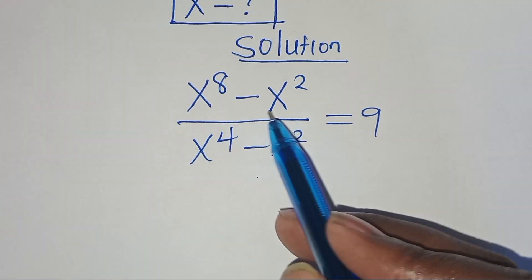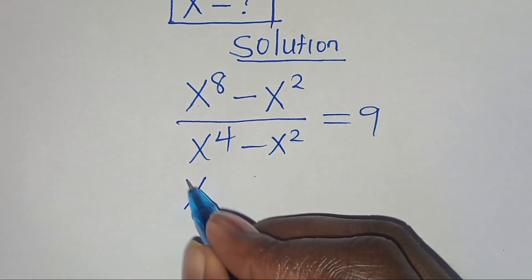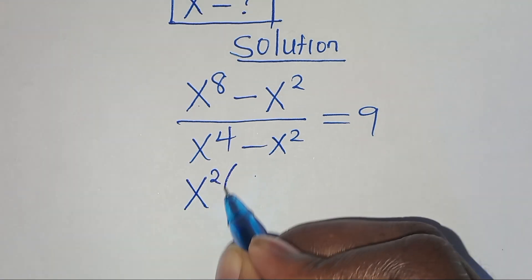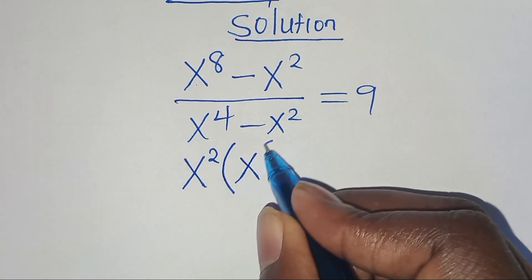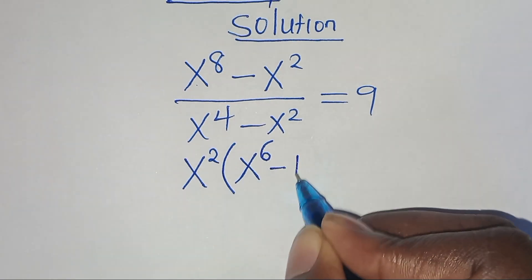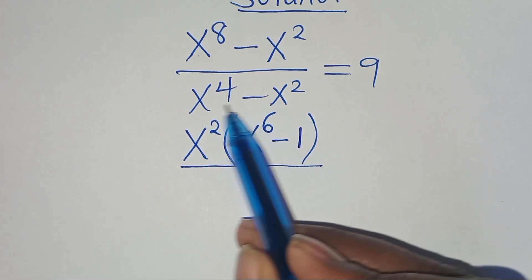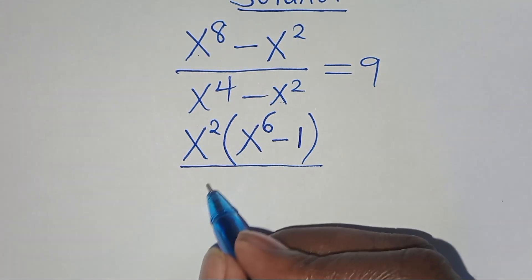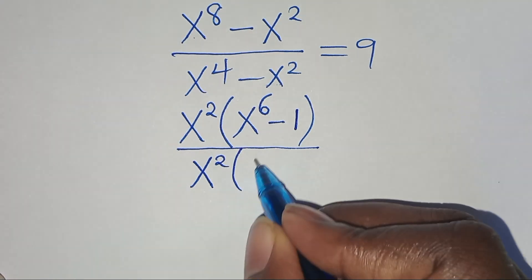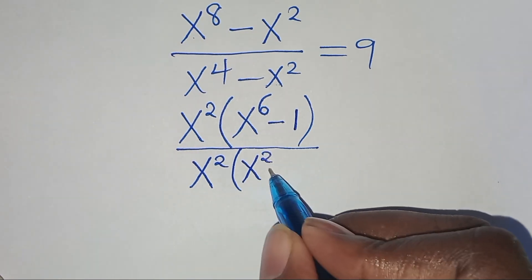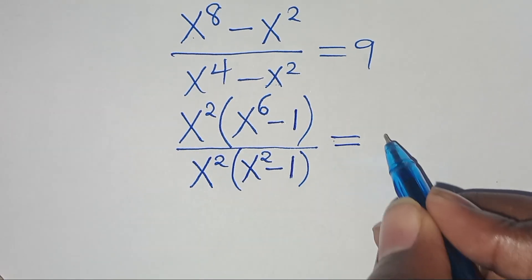Again, we can express in the numerator here, x to the power of 8 minus x to the power of 2 — x to the power of 2 is common here, so we can factor out x to the power of 2, so that in the parentheses we have x to the power of 6 minus 1. Divided by — again in the denominator here, x to the power of 2 is common, so we can factor out x to the power of 2, so that we have x to the power of 2 minus 1. This is equal to 9.